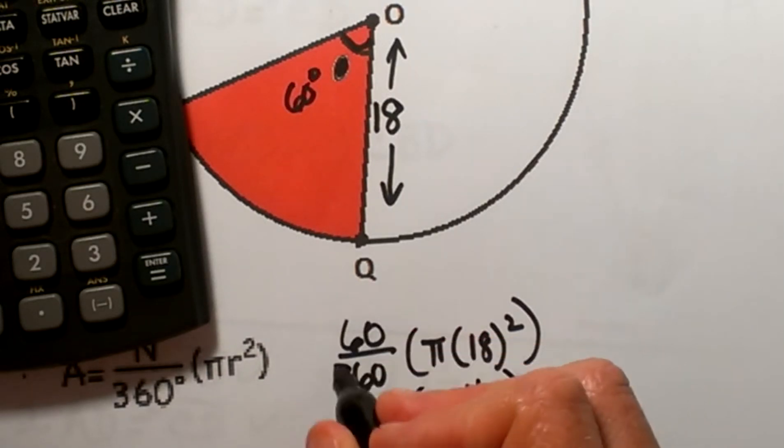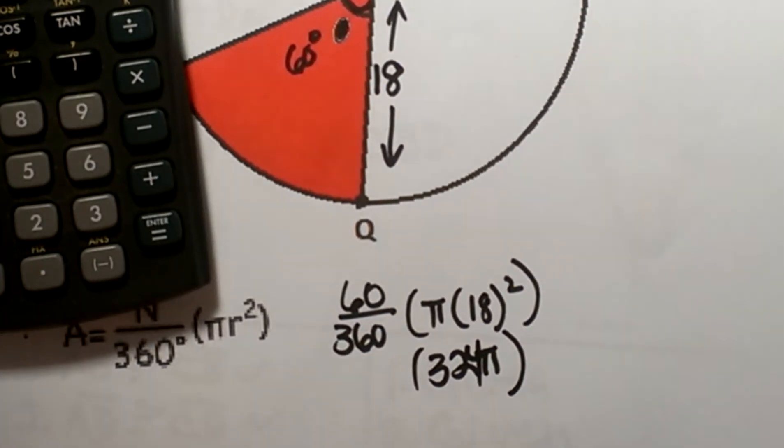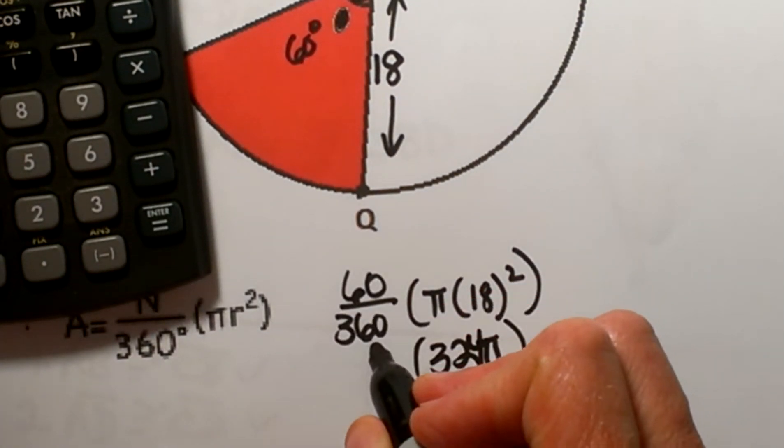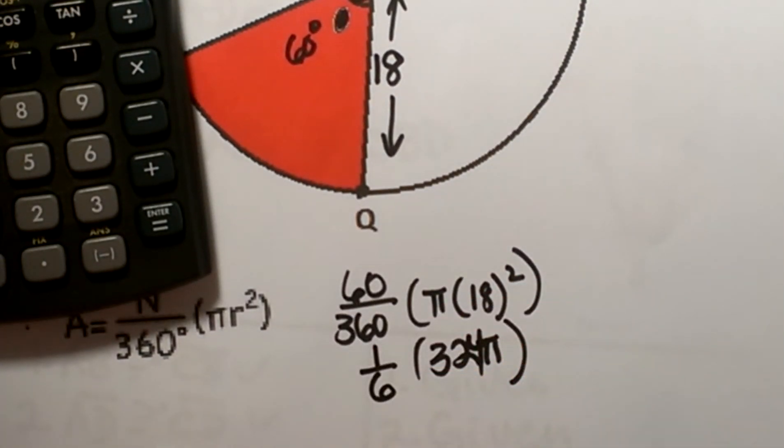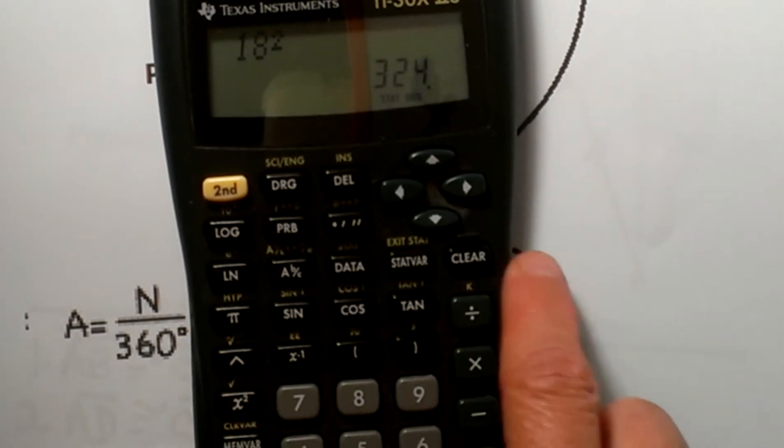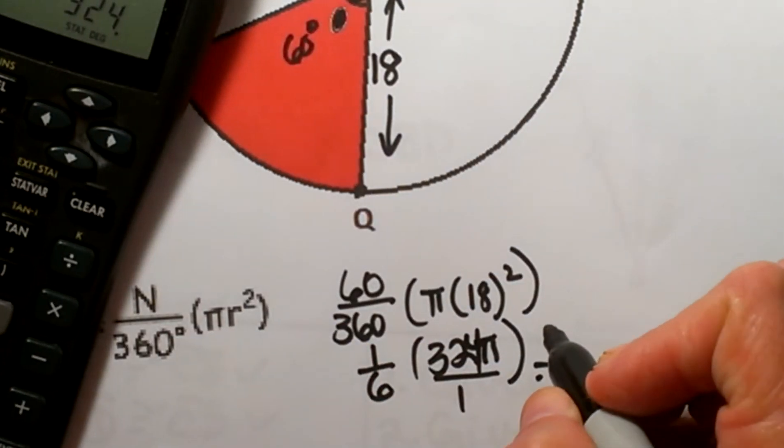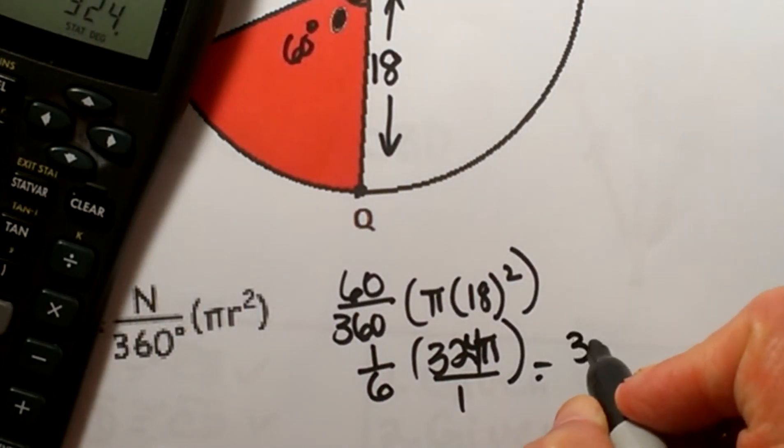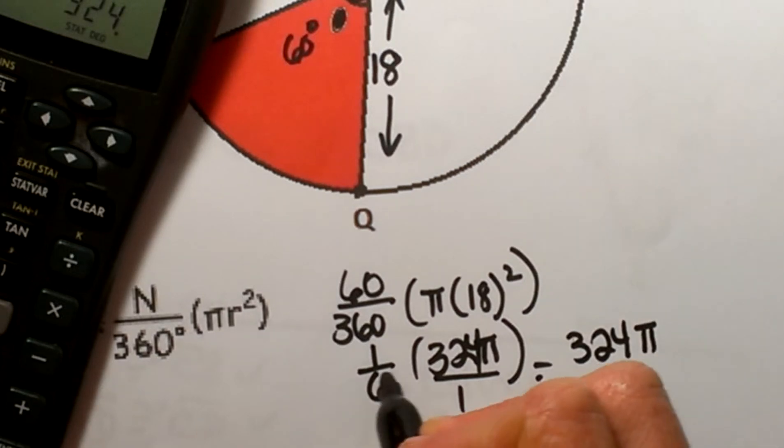Now let's think of this 60 degrees over 360. That reduces to one sixth of the circle. So now I am going to take one sixth times 324 pi. So 324 on top is going to give me 324 pi because you just multiply straight across, and then the denominator 6 times 1 is 6.